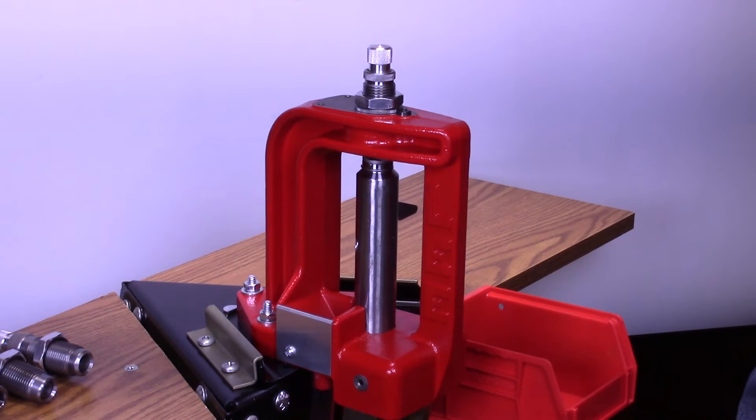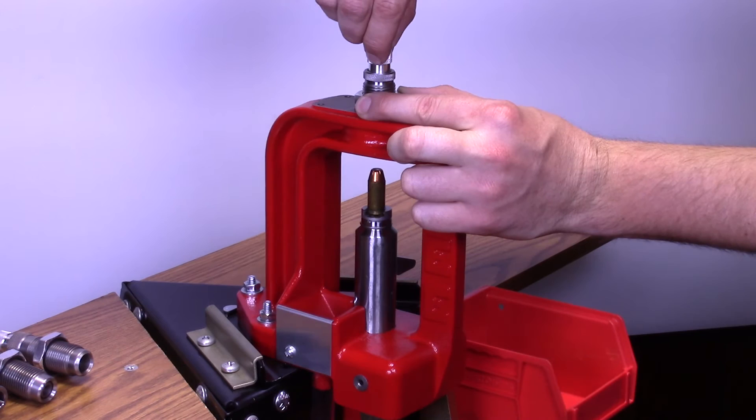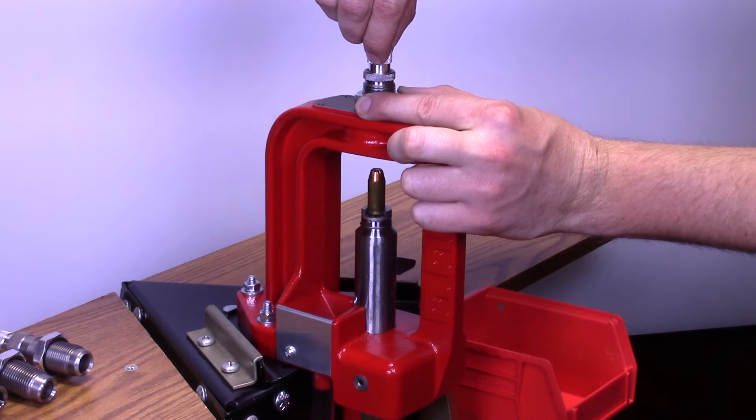Then, move the cartridge out of the die slightly and screw the adjusting screw in one half a turn for a light crimp and one full turn for a heavy crimp.